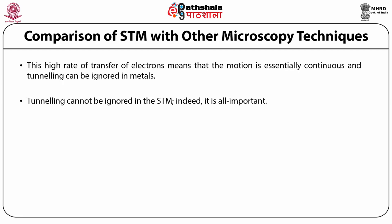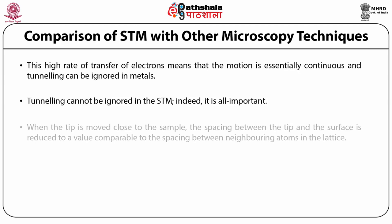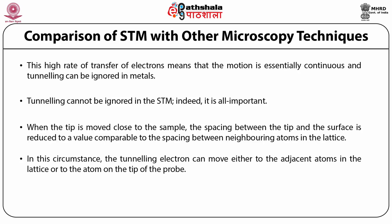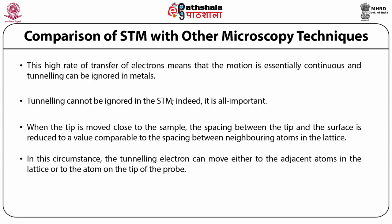Tunneling cannot be ignored in the STM — indeed, it is all-important. When the tip is moved close to the sample, the spacing between the tip and the surface is reduced to a value comparable to the spacing between neighboring atoms in the lattice. In these circumstances, the tunneling electron can move either to the adjacent atom in the lattice or to the atom on the tip of the probe. The tunneling current to the tip measures the density of electrons at the surface of the sample, and this information is displayed in the image.